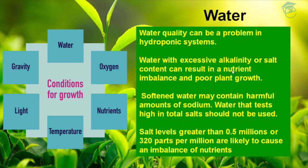Now comes water quality. Water quality can be a problem in hydroponic systems. Water with excessive alkalinity or high salt content can result in nutrient imbalance and poor plant growth. Softened water may contain harmful amounts of sodium. Water that tests high in total salts should not be used. Salt levels greater than 0.5 millimhos or 320 parts per million are likely to cause a nutrient imbalance.